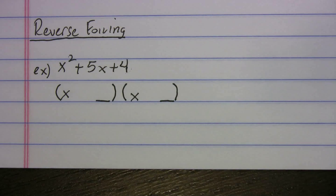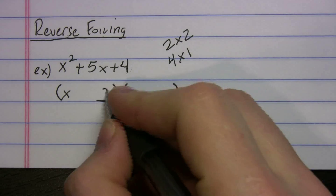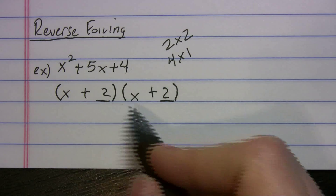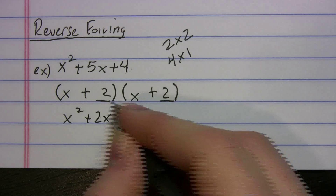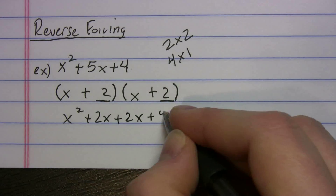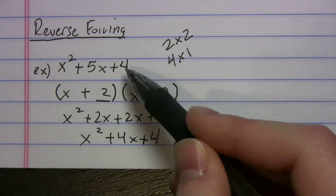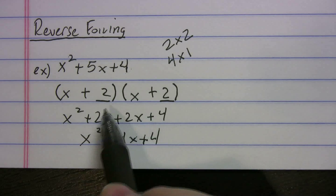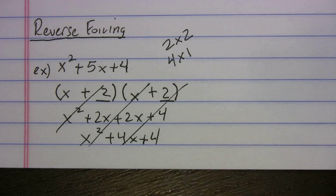What times what gives you 4? You can do 4 × 1 or 2 × 2. Let's try 2 and 2 first — all signs positive. Foiling that out gives x² + 2x + 2x + 4 = x² + 4x + 4. We got the last term right, but our middle terms added to 4x, not 5x. So this is wrong — your last terms must add to the middle term.